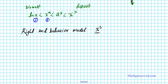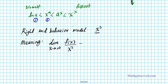Let's write down the meaning of the answer. The right end behavior model is x to the third. What does it mean for x to the third to be the right end behavior model for f of x? It means that the limit as x approaches infinity of f of x divided by x to the third equals 1, because at infinity this function behaves just like x to the third — so when you divide them, you get 1.